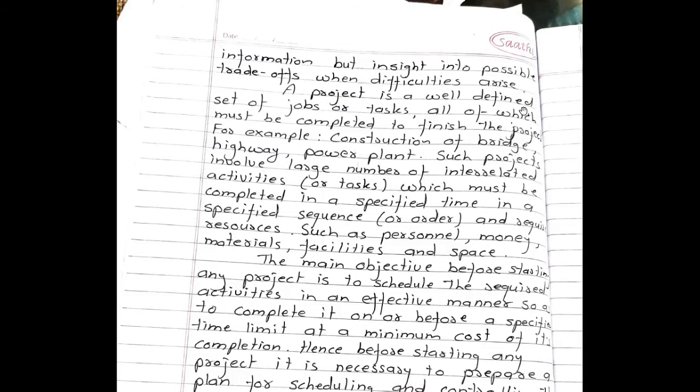A project is a well-defined set of jobs or tasks, all of which must be completed to finish the project. For example, construction of bridge, highway, power plant, etc. Such projects involve large numbers of interrelated activities or tasks which must be completed in a specified time and sequence, and require resources such as personnel, money, materials, facilities, and space.